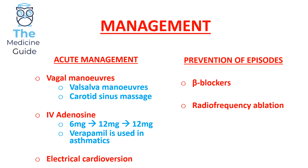IV adenosine is important because normally the SVT is terminated after using it. However, if you use IV adenosine in a patient presenting with atrial flutter, the flutter waves become more prominent. So if you're unsure whether a patient has an SVT or atrial flutter, IV adenosine can help differentiate: it terminates SVT, whereas in atrial flutter the flutter waves become more prominent.